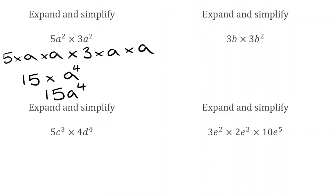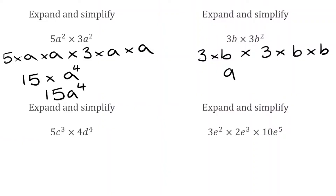For the next question we've got 3b — which is 3 multiplied by b — times 3b squared, which is 3 multiplied by b times b. In terms of the numbers: 3 times 3 is 9. For the b's: b times b times b, so we've got b to the power of 3. The final answer is 9b cubed.